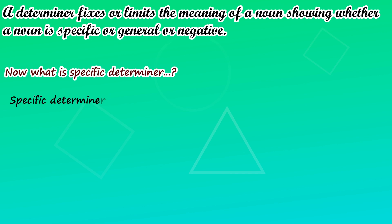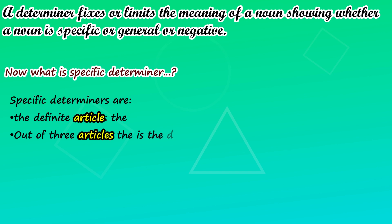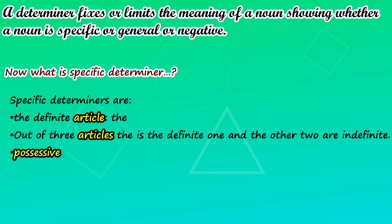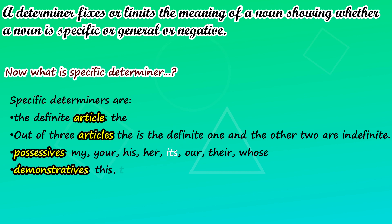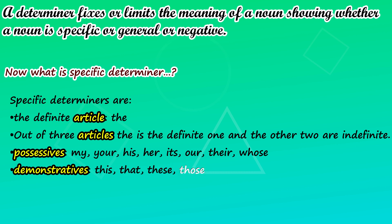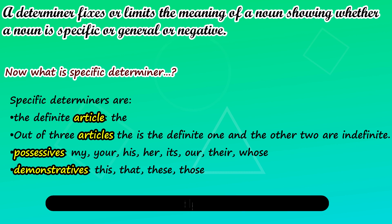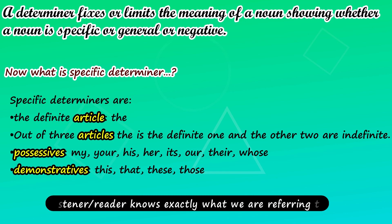Specific determiners include the definite article the — out of three articles, the is the definite one and the other two are indefinite. Possessives — my, your, his, her, its, our, their, whose — are examples of possessives. Demonstratives — this, that, these, those — are examples. Basically, we use a specific determiner when we believe the listener or reader knows exactly what we are talking about or referring to.